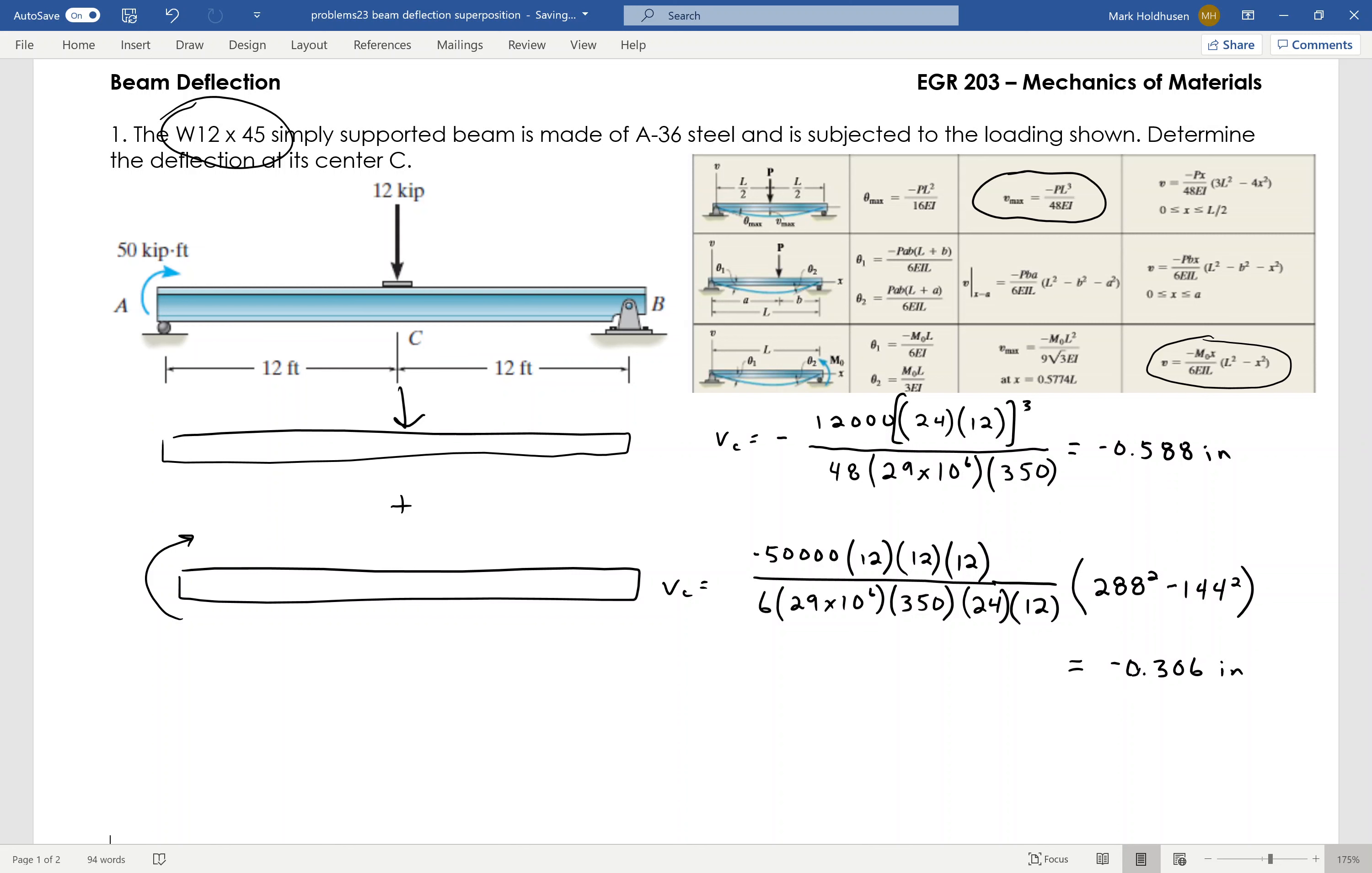Now all I need to do is add those two together, that's how superposition works. Add those two together, get the total deflection due to these two loads of negative 0.895 inches. So you just break it up into pieces, figure out what each load does, and then add those two together.